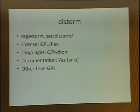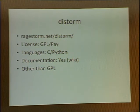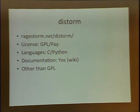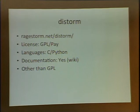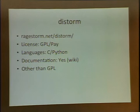Next one is Distorm. This is one of the most popular x86 disassemblers. It does 32-bit and 64-bit, a whole bunch of different CPU extensions. It's written in C, and there's a Python wrapper that's pretty straightforward — you can easy_install or pip it. There's a lot of documentation on their wiki, and it's pretty great other than the GPL part. But if you want to use it for your company, you can give them some money and they'll say it's not GPLed anymore.